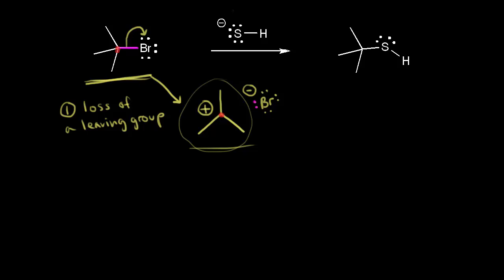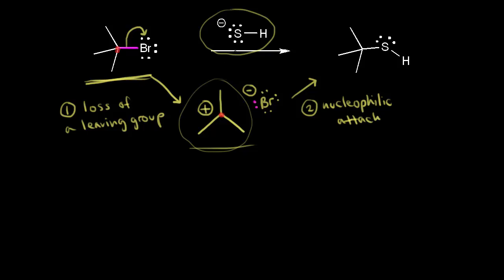Our nucleophile will be the hydrosulfide ion with a negative charge — opposite charges attract. In the second step of our mechanism, our nucleophile attacks our electrophile. A lone pair of electrons on our sulfur forms a bond with our carbon in red.